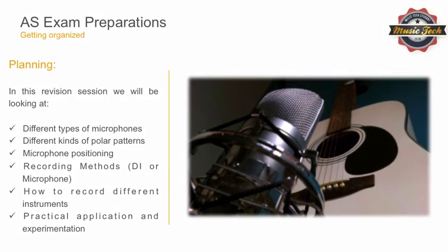In this revision session, we're going to look at the following. We're going to look at different types of microphones — making sure you know the difference between a dynamic microphone and a condenser microphone — and making sure you understand the difference between the four main polar patterns, which are cardioid, hypercardioid, omnidirectional, and figure of eight. Make sure you understand how to position a microphone correctly. We tend to work in centimetres, so understanding how far away you're going to position your microphone, whether it be close micing or ambient micing, and then give a rough approximation of the distance.